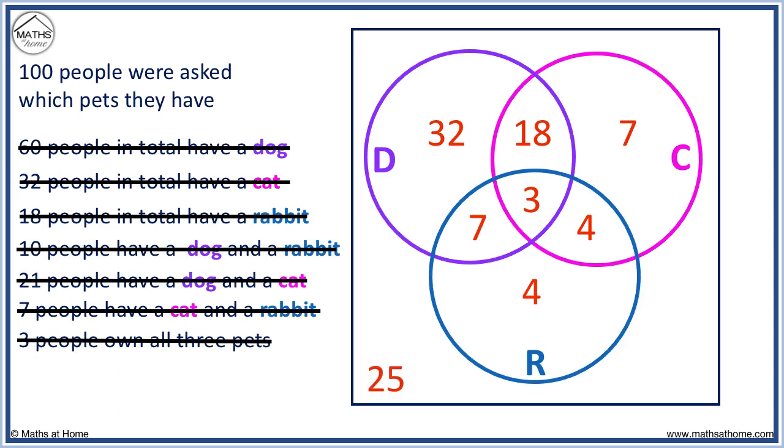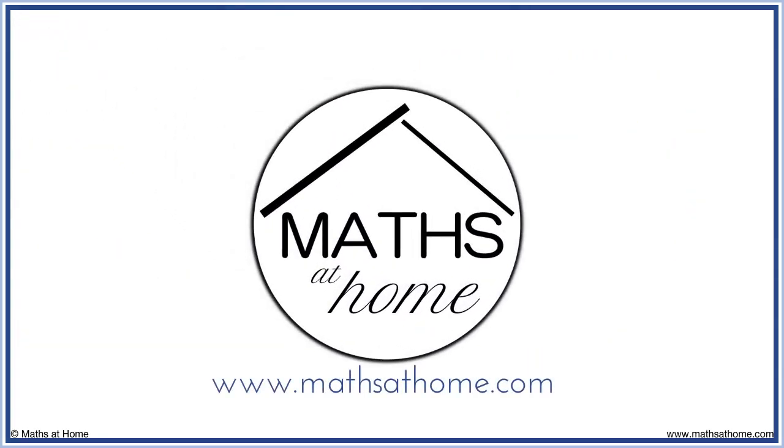These people do not own any of the 3 pets and so they are on the outside of the circles. Visit mathsathome.com for further videos and practice.